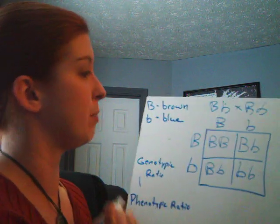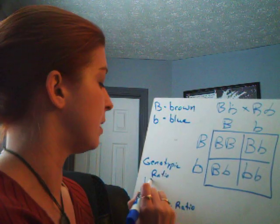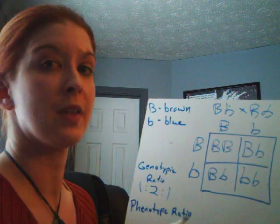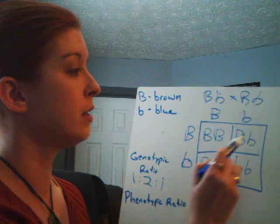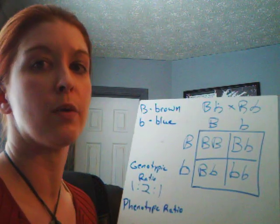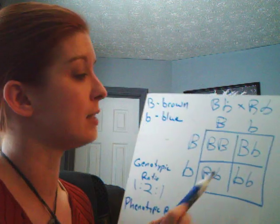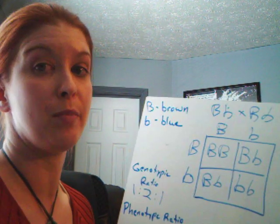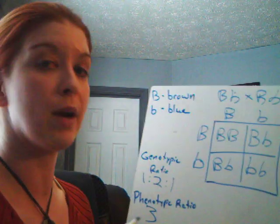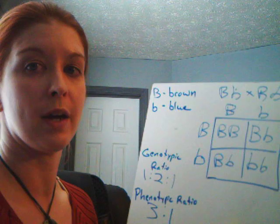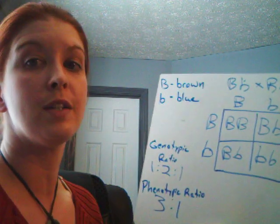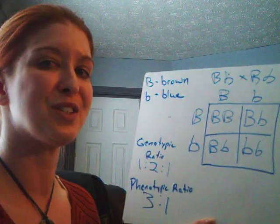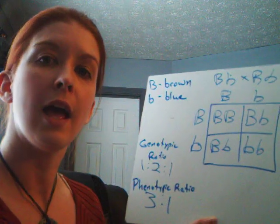Now we've got something different. We have one big B big B, two big B little b's, and one little b little b. So that's your genotypic ratio: one to two to one. The phenotypic ratio has only two options — brown eyes and blue eyes. Three of these four have at least one big B present, so that's three brown eyes to one blue eye. Genotypic ratio and phenotypic ratio don't always have to be the same, and that's okay — but you need to know that to get the question right on the test. Good luck studying and happy biology.